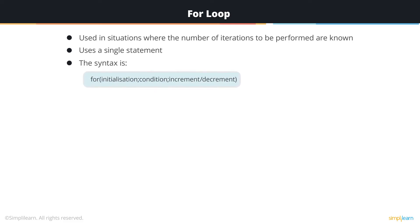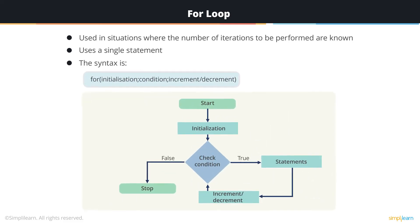The syntax of a for loop is as shown. The first component is Initialization — here, the variable that is to be used is initialized. It can be a variable that has already been declared or one that is localized to the loop alone.